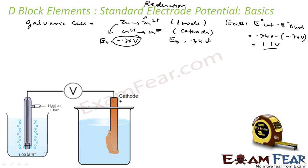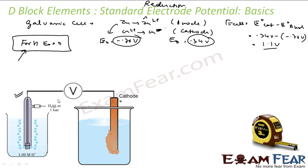These values — 0.34 volt or minus 0.76 volt — are with respect to hydrogen. When you talk about standard electrode potentials, you have to talk with respect to something. Chemists decided to take hydrogen and assume that for hydrogen E⁰ is zero. This is an assumed value, and with respect to this all other E⁰ values are formed. To find them, we take a hydrogen electrode at the anode, and a cathode, then do the reaction and find the voltage.